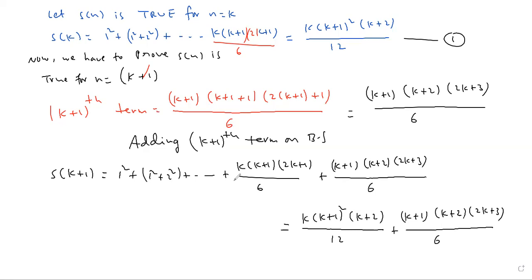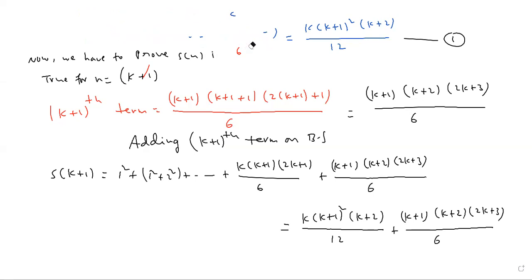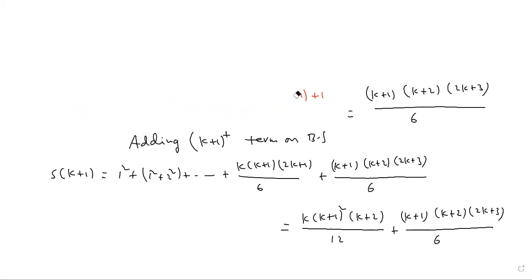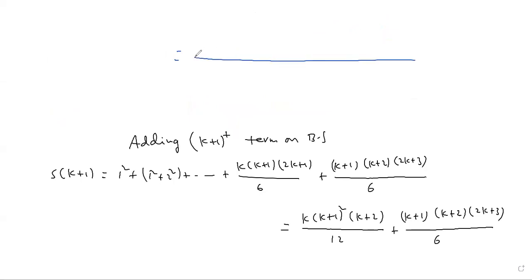Take LCM and solve. The LCM is 12. So the RHS becomes: k(k+1)²(k+2) + 2(k+1)(k+2)(2k+3), all divided by 12.